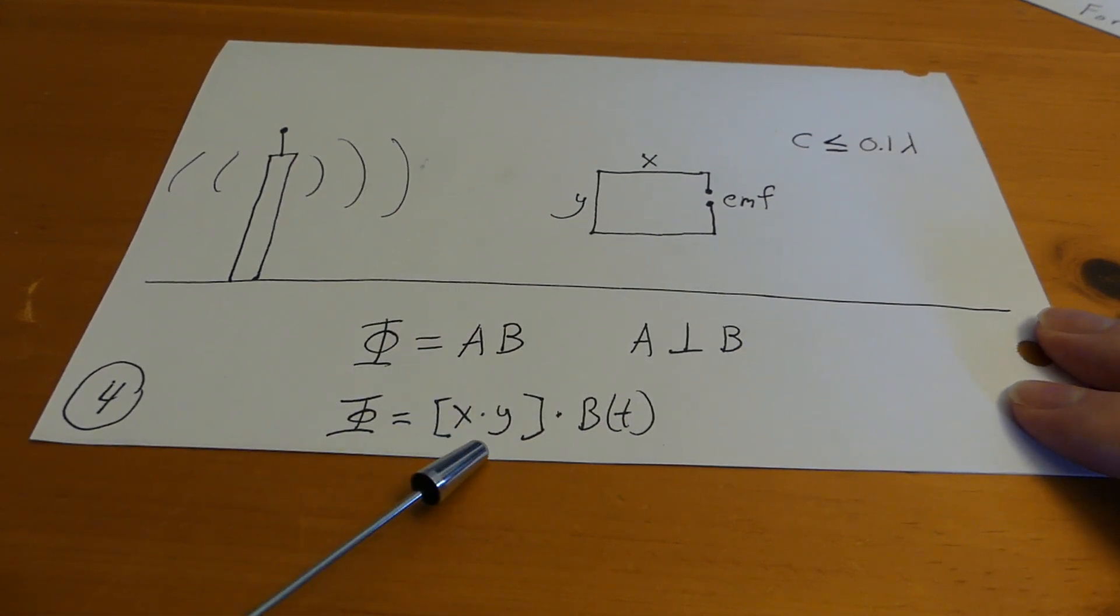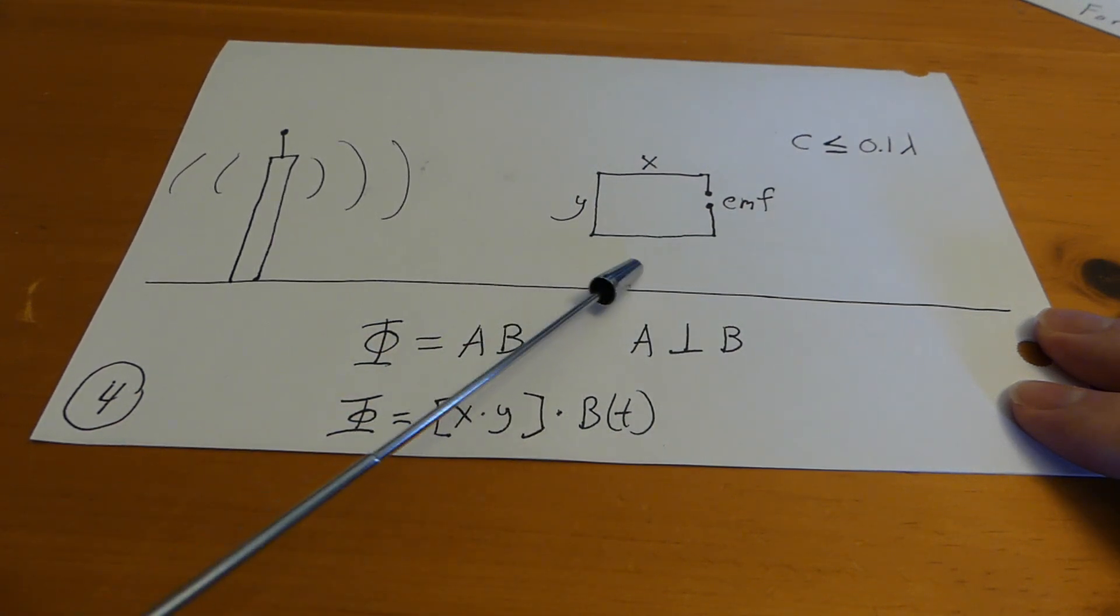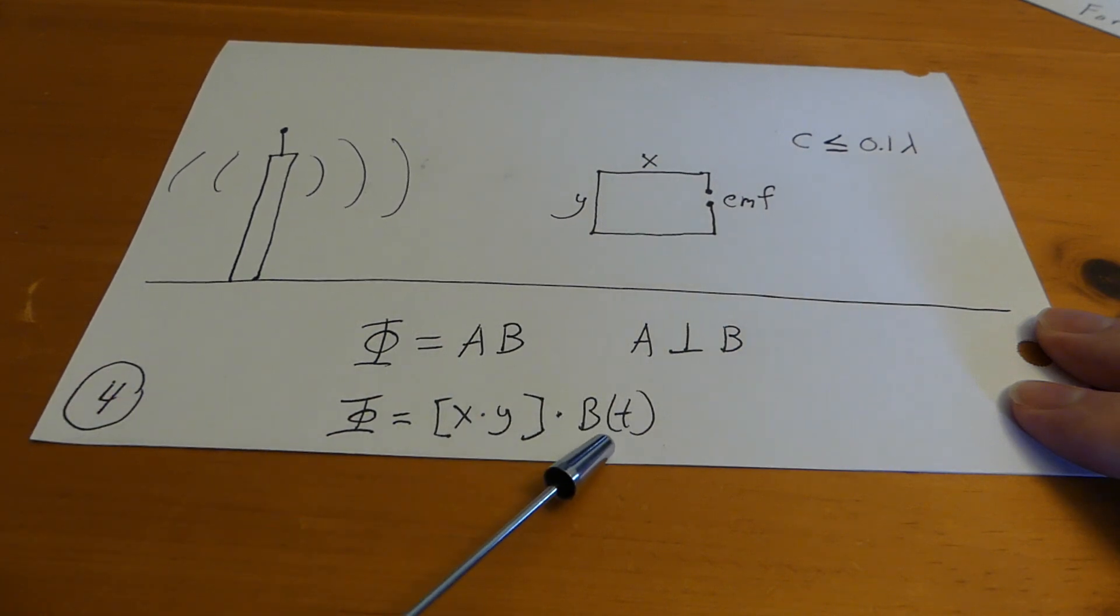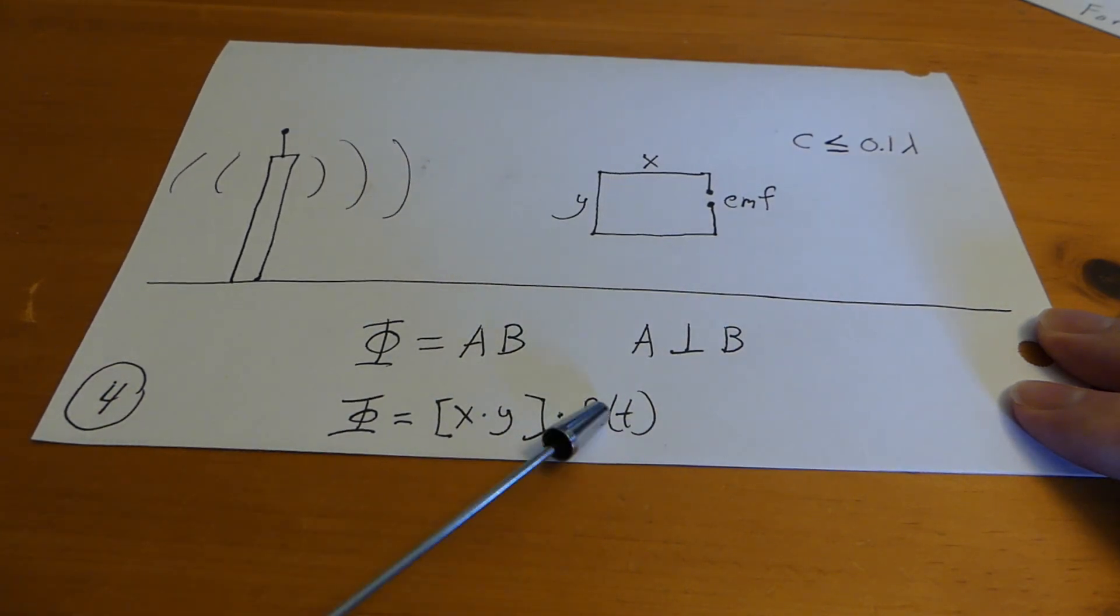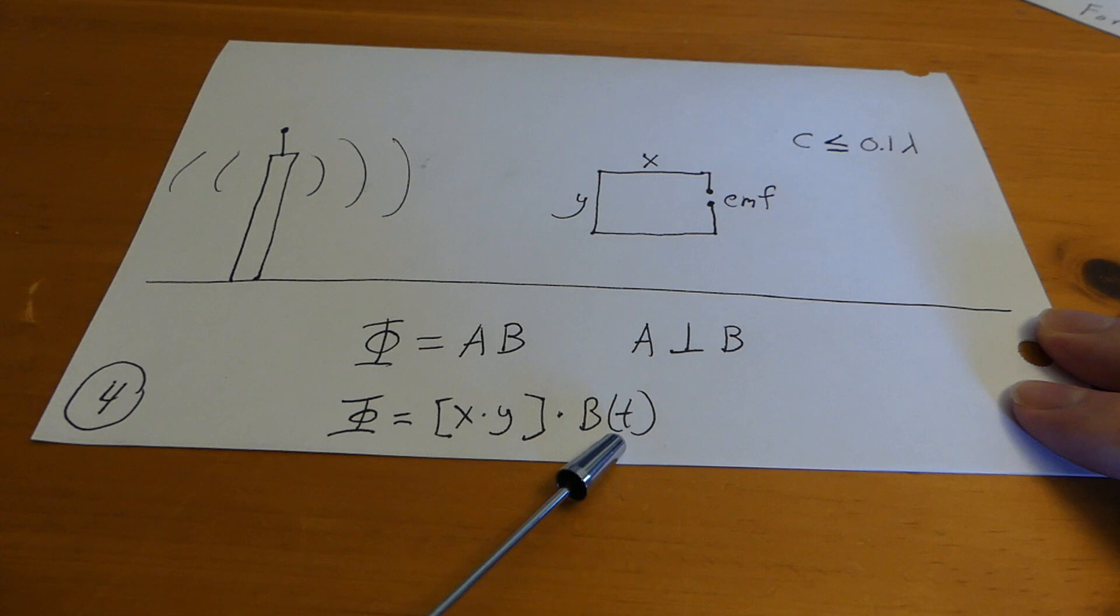Well, area we can replace with x times y and b is for radio waves anyway. The magnetic field is going to be a time varying function. And that is the basic principle of radio waves. They have an electric field and a magnetic field which are both time varying. They are not static.